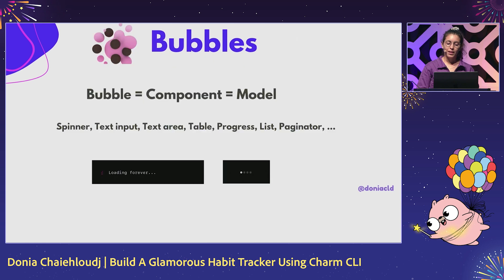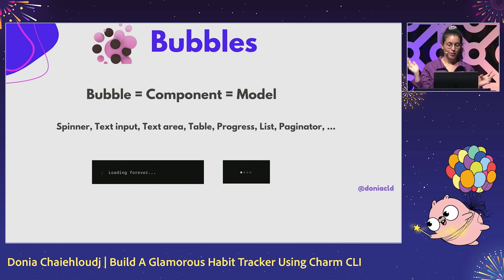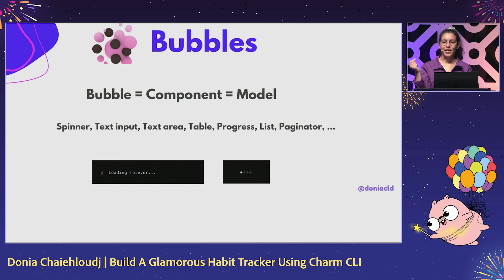Bubble Tea has many things available which is really fun — you can just take them off the shelf. There's the spinner, text input, text area, table, and many more. These are models already implemented that you can just take and use directly in your code.